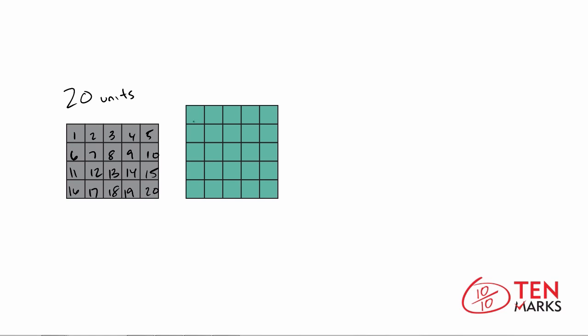Now let's count how many unit squares are in this shape to the right. 1, 2, 3, 4, 5, 6, 7, 8, 9, 10, 11, 12, 13, 14, 15, 16, 17, 18, 19, 20, 21, 22, 23, 24 and 25. So the shape on the right has 25 units of area.